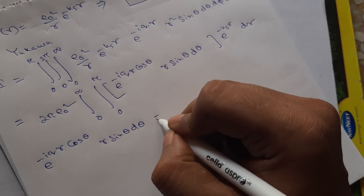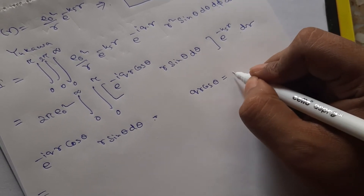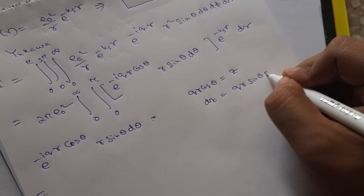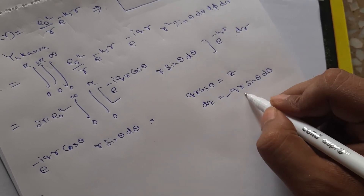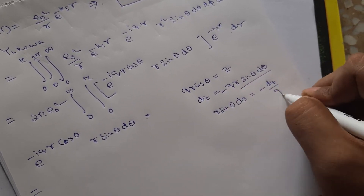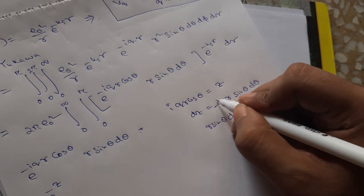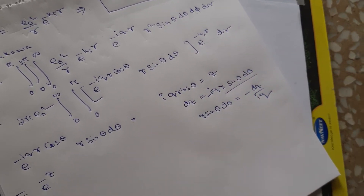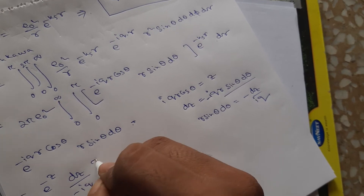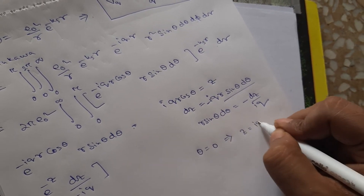We perform a substitution: let z = q r cos θ, so dz = −q r sin θ dθ. Therefore r sin θ dθ becomes −dz/q. The integrand becomes e to the power minus iz, and the differential becomes dz over i q.